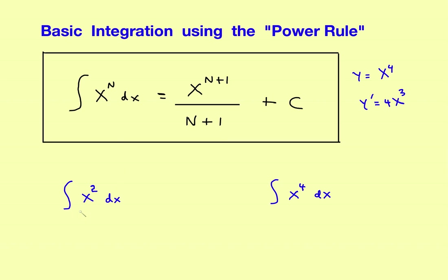Let's look at a couple of examples. What is the antiderivative of x squared with respect to x? Applying the rule, if the old exponent was 2, I'm going to increase the power by 1, which gives me x cubed divided by the new exponent, which is 3, plus C, and I'm done. So if x squared is the derivative, then x cubed over 3 plus C is the function that gives you that derivative.